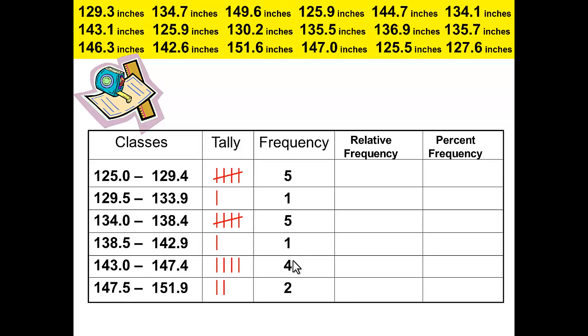Then we can turn the frequency into relative frequency. Remember that relative frequency takes the frequency and compares by division to the total number of the data set. For the first class we have 5 divided by 18 which gives us 0.2778. We will want to take this out four decimal places. The next one will be 1 over 18 which equals 0.0556. 5 over 18 gives us 0.2778. 1 over 18 equals 0.0556.